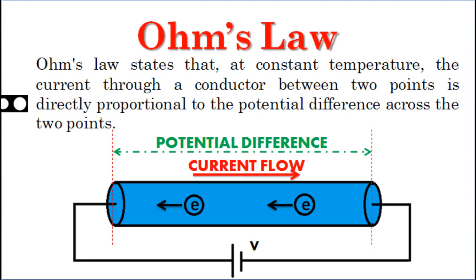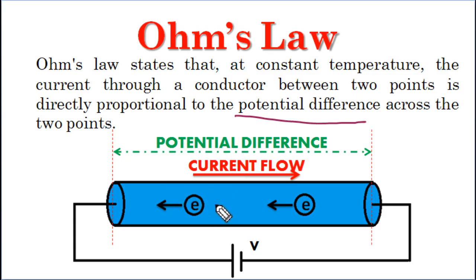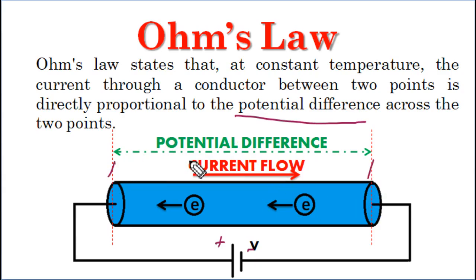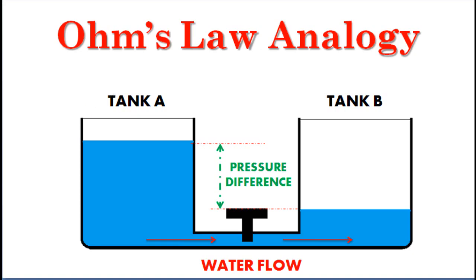Ohm's law states that at constant temperature, the current through a conductor between two points is directly proportional to the potential difference across the two points. Here I have shown a conductor — this blue color is a conductor — and you can see that electrons will always flow from the negative potential of the battery to the positive potential. A voltage source provides the potential difference across the conductor, and the current flows accordingly. To better understand Ohm's law, let us look at a water analogy.